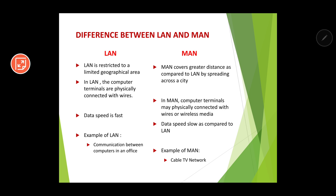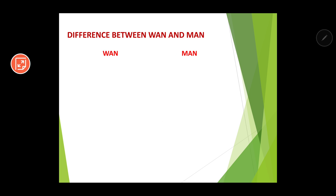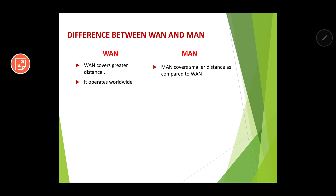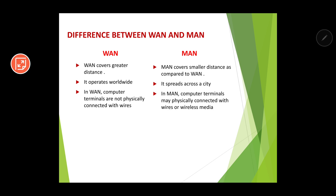The difference between WAN and MAN: WAN covers greater distance whereas MAN covers lesser distance. WAN operates worldwide but MAN spreads only across a city. In WAN, computer terminals are not physically connected with wires, whereas in MAN they may or may not be physically connected. An example of WAN is the internet, and an example of MAN is the cable TV network.